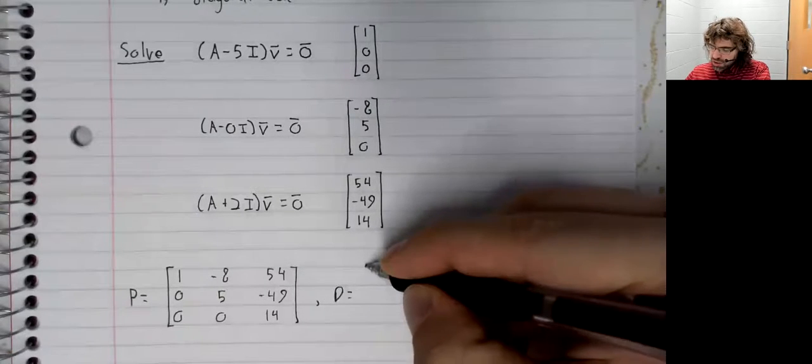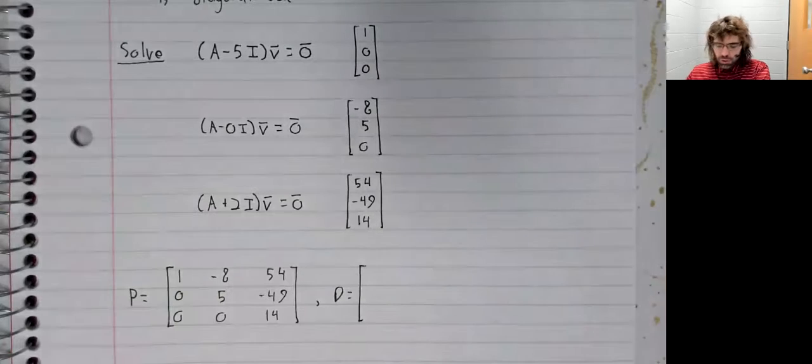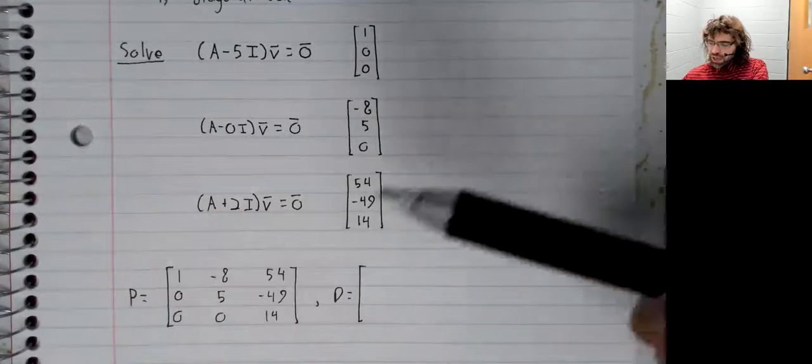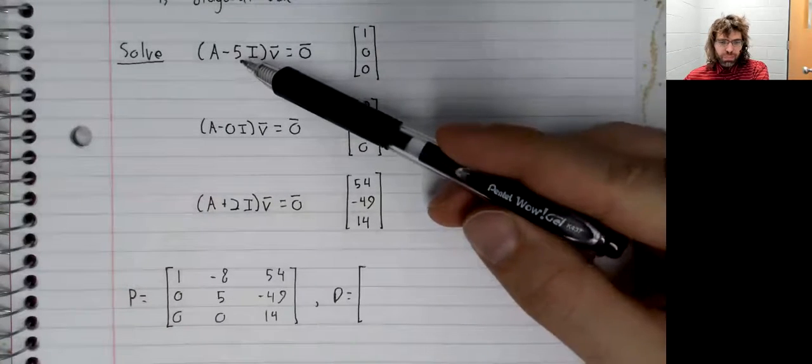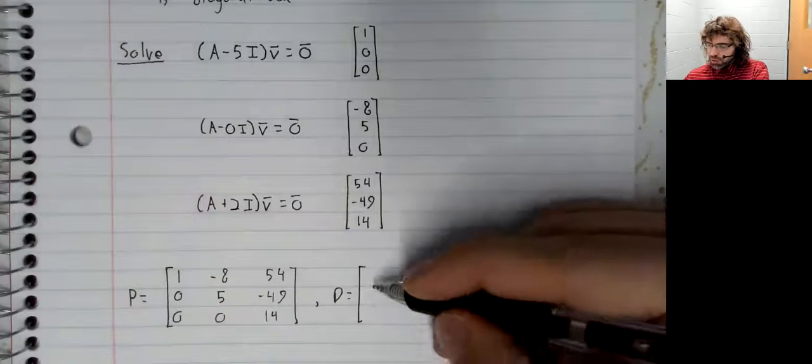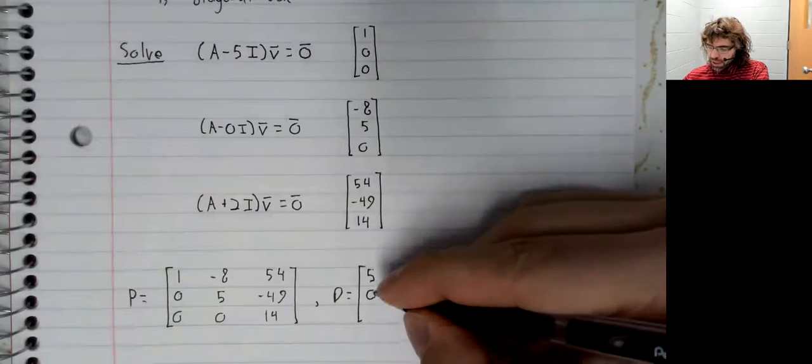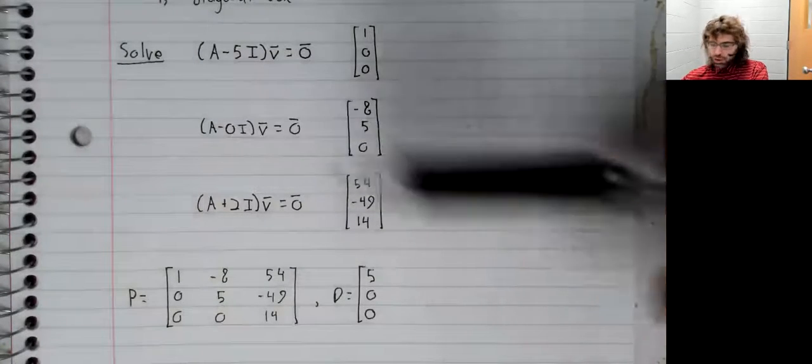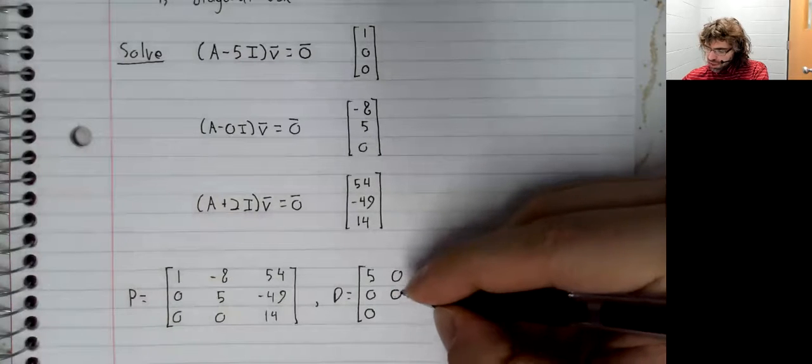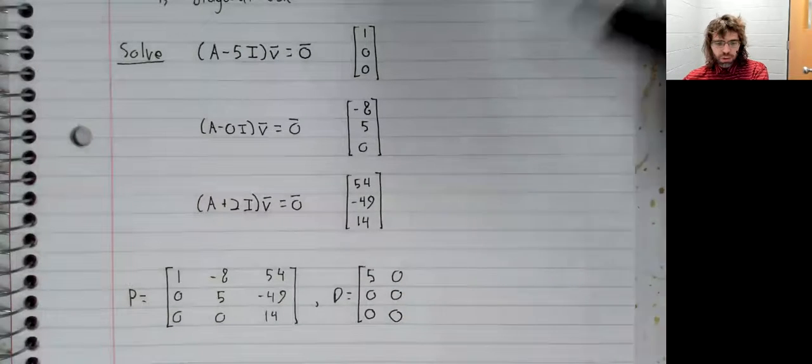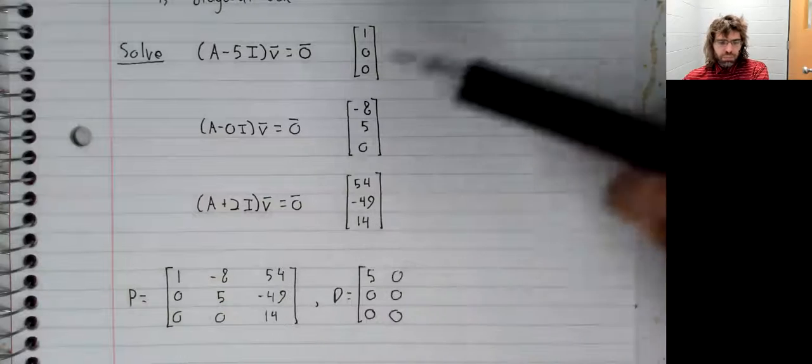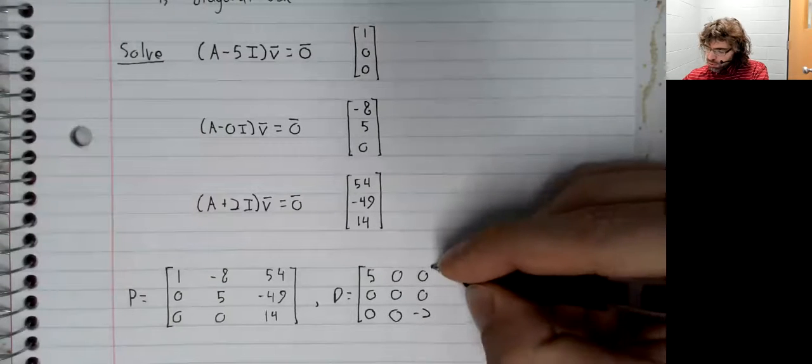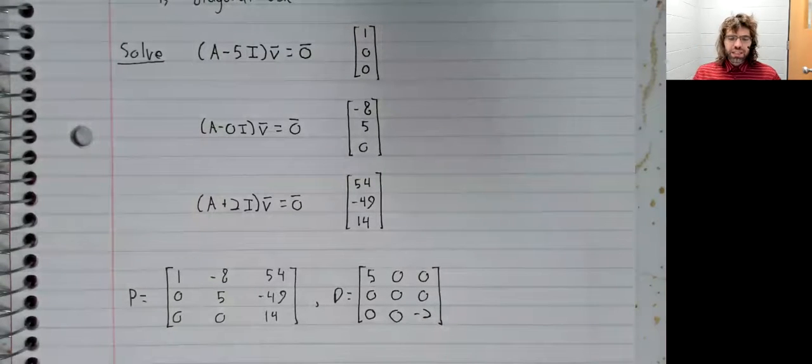And to find D, note that P and D should correspond to each other in the sense that this first column comes from five, so this first diagonal element will have five in it. The second column comes from zero, so our second diagonal element is zero. The third column comes from negative two, so our third diagonal element is negative two.